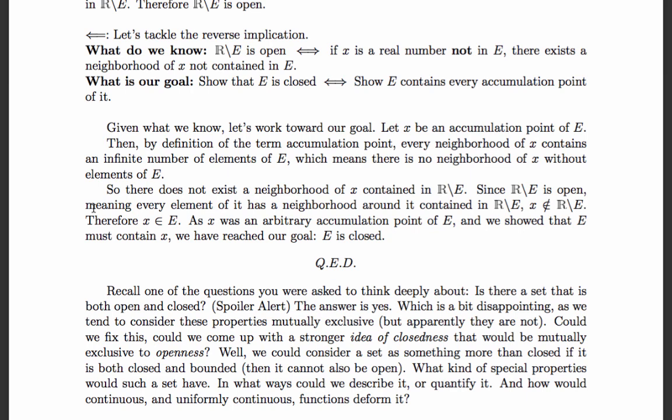Let X be an accumulation point of E. By definition of the term accumulation point, every neighborhood of X contains an infinite number of elements of E, which means there is no neighborhood of X without elements of E. So there does not exist a neighborhood of X contained in the complement of E. Now, the complement of E is open, so every element of it has a neighborhood contained in the complement of E. Therefore, X is not one of those entries. And if X is not in the complement of E, it must be in E. X is an arbitrary accumulation point of E and must be contained in E. QED.